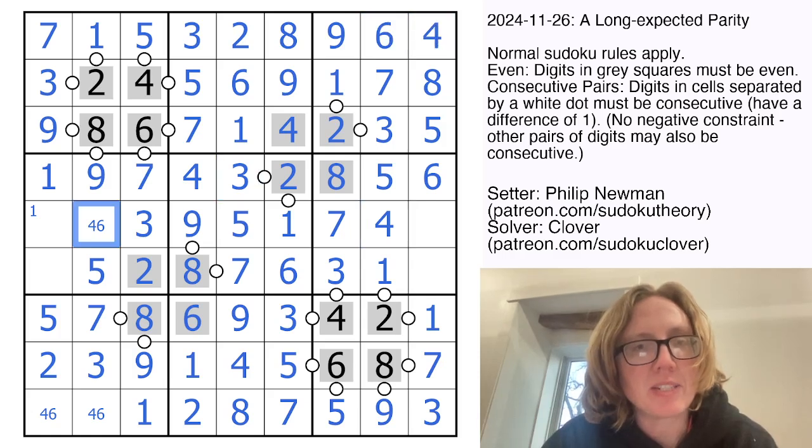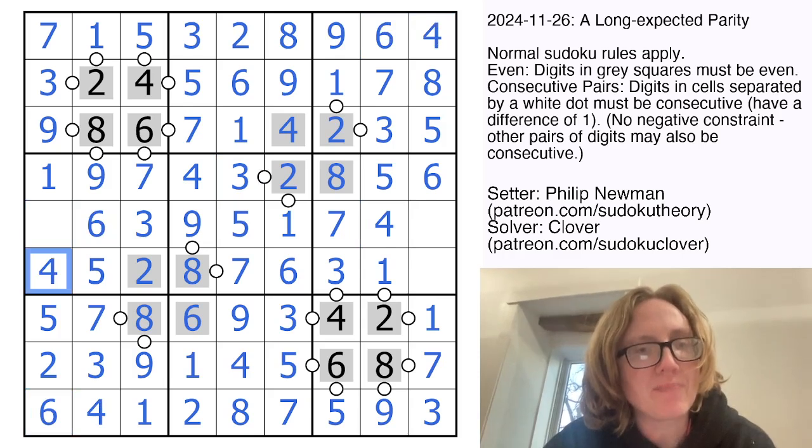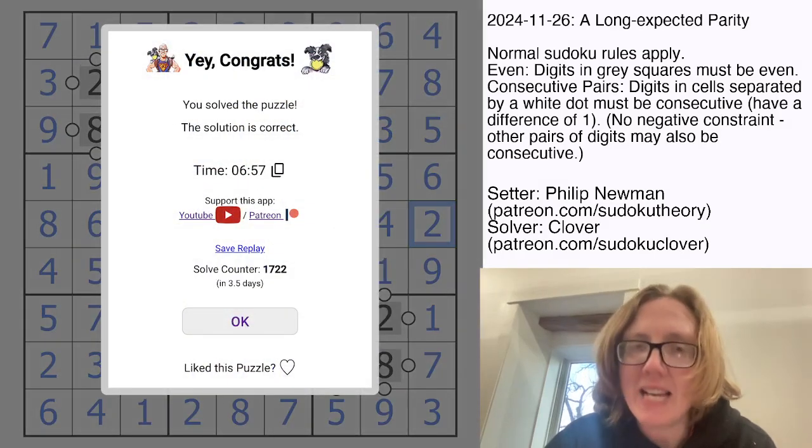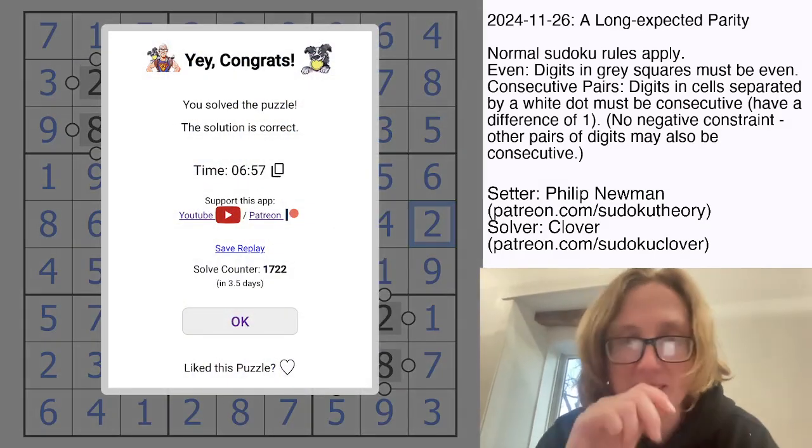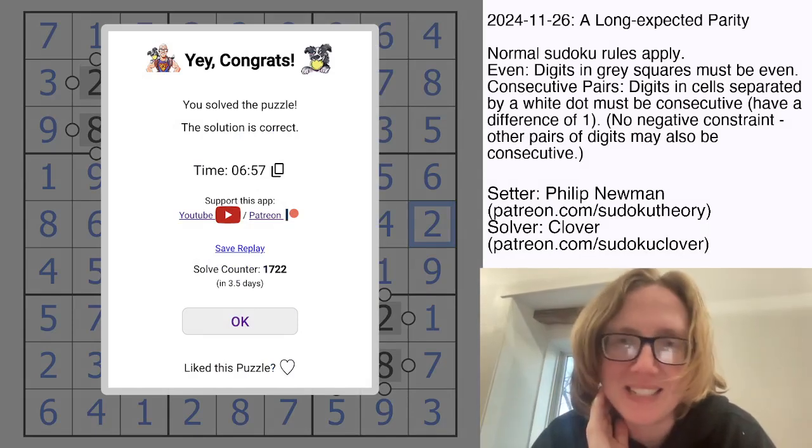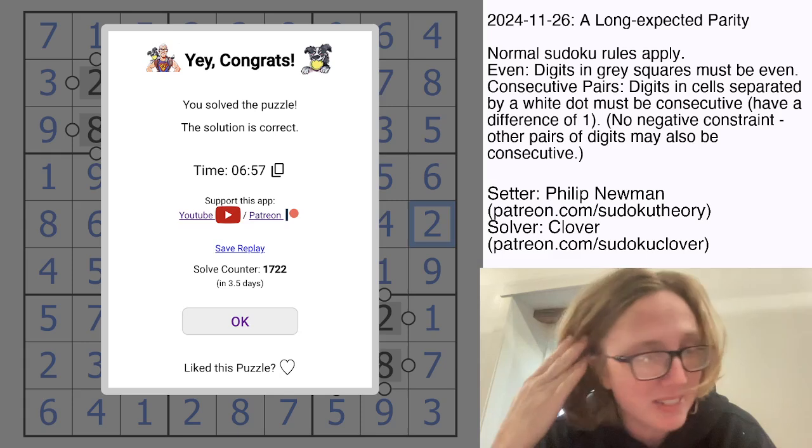And I think that all we're going to need now is classic Sudoku. 4 there, 8 there, 9 there, and 2 there. And that is how you solve Philip Newman's A Long Expected Parity. I really enjoyed that one. That was a very clean solve path. And I really enjoy Odd Even as well.